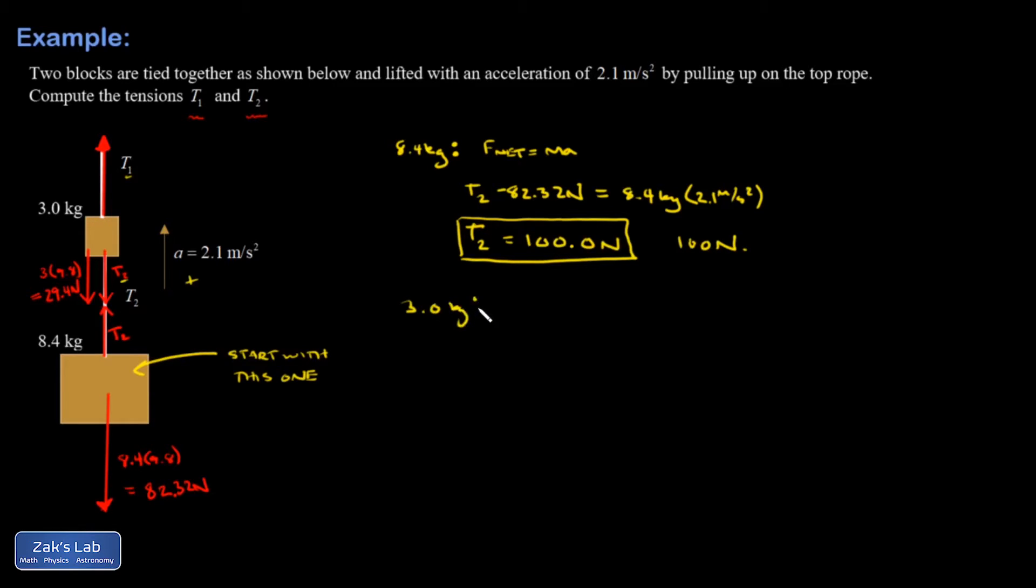On the 3.0 kilogram mass apply f net equals ma. Positive force, that's T1, and then two negative forces, so minus 29.4 that's the weight, minus 100 that's the tension in that middle string. The net force is equal to the mass that I'm looking at, three kilograms multiplied by the acceleration. Solve for T1, so three times 2.1 plus 100 plus 29.4, and I get 135.7 newtons for that. I'll round that to three sig figs, 136 newtons.